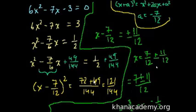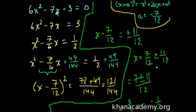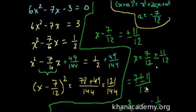There you have it — that is completing the square. Hopefully you found that reasonably insightful. And if you want to prove the quadratic equation, all you have to do is write ax squared plus bx plus c equals 0, and then complete the square using a, b, and c instead of numbers, and you will end up with the quadratic equation. I'll see you in the next video.